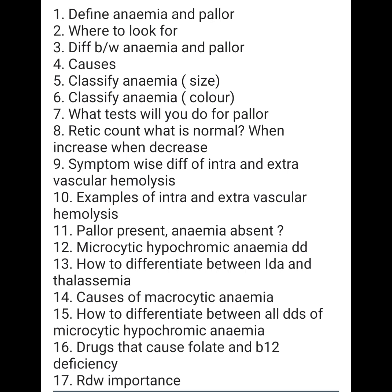Question number 12: microcytic hypochromic anemia differential diagnoses. There are four DDs: thalassemia minor, iron deficiency anemia, anemia of chronic diseases, and hereditary spherocytosis. How to differentiate between IDA and thalassemia? If the RDW is more than 13, it is iron deficiency anemia. If it is less than 13, it is thalassemia.